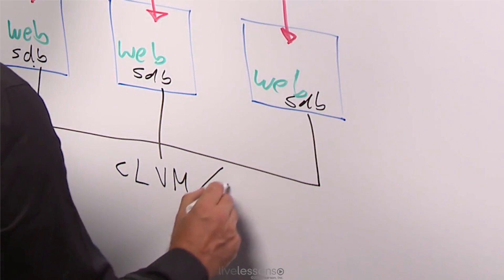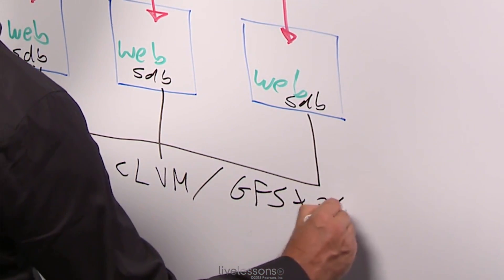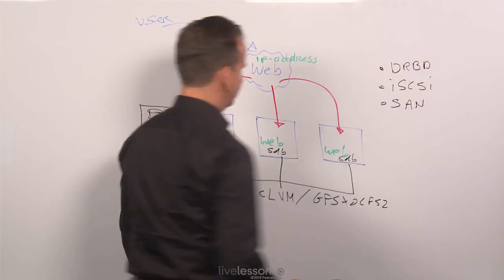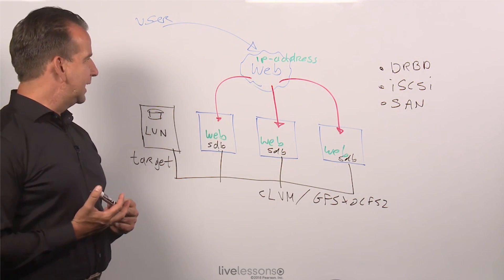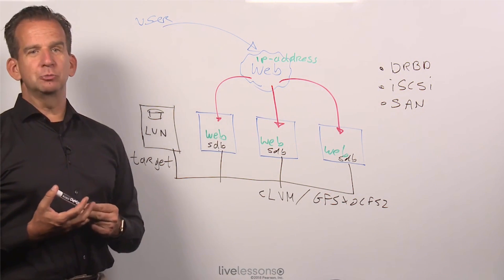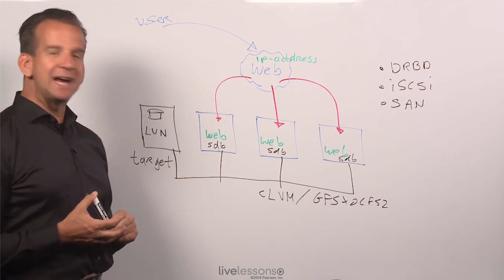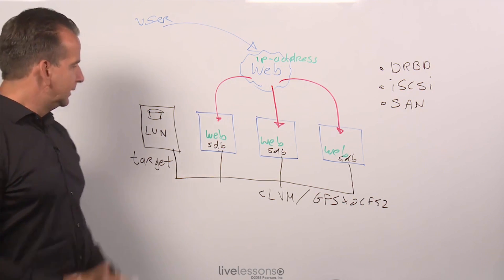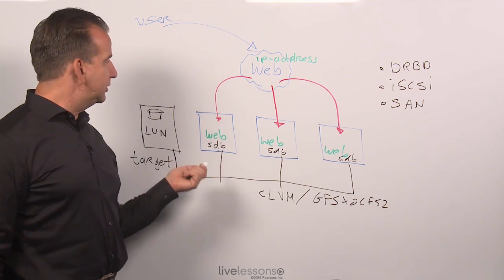Also, you should consider using clustered file systems, like GFS or OCFS2. GFS and OCFS2 are clustered file systems, and what makes them clustered file systems is that both of them are file systems that can be used in an active-active configuration. Now do we really need GFS and OCFS2 if you are using iSCSI?